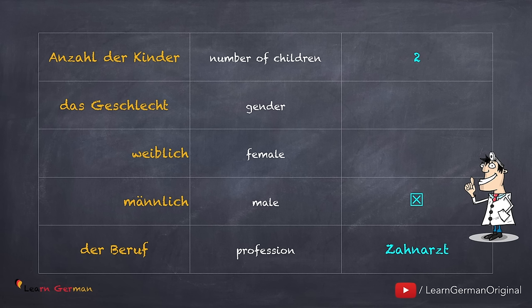The next one is der Beruf — you should be able to mention the profession that you are practicing. If you want to learn what various professions are called in German, you can watch our video on that topic — the link can be found below in the description.